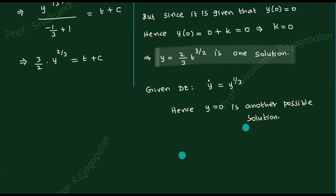Taking the expression to the other side and raising to the power 3/2, we get y = (2t/3)^(3/2) as one solution. But y = 0 is also a solution. It is also possible to show that this equation has even more solutions by adding additional constants involving t. The moment you have two solutions, uniqueness is lost.